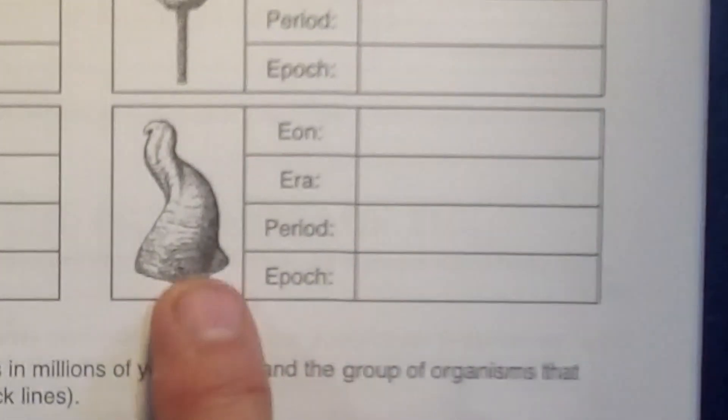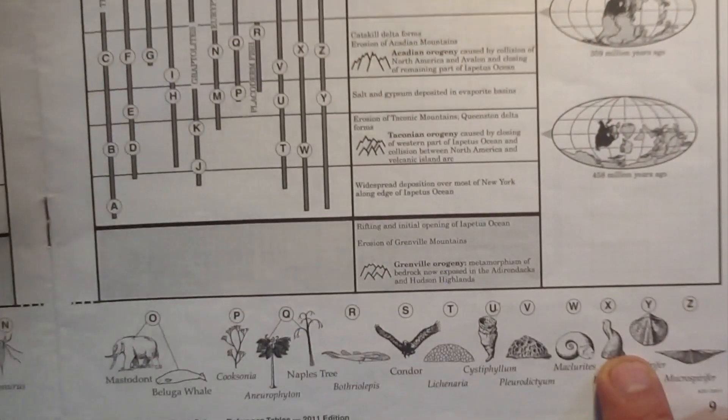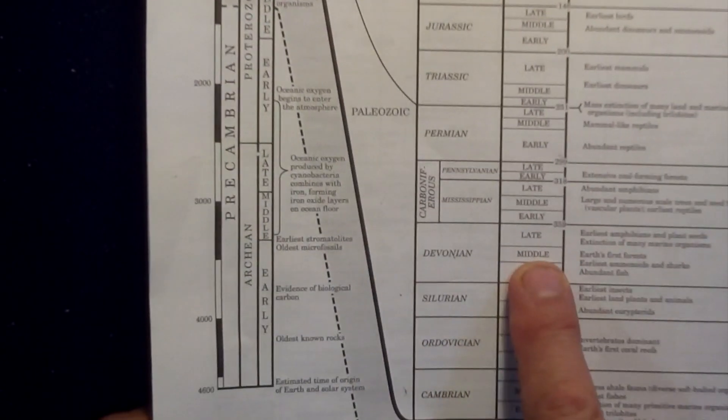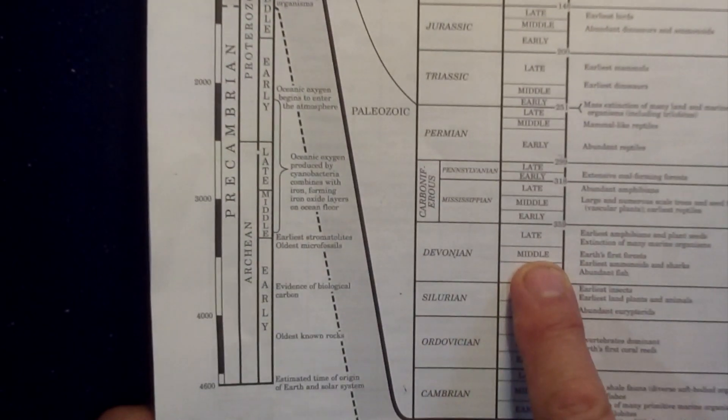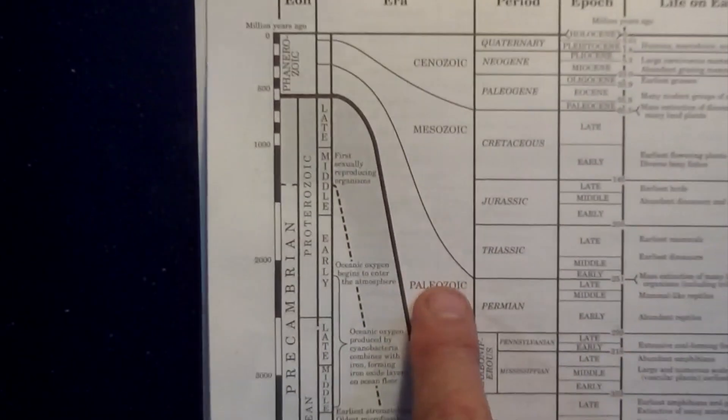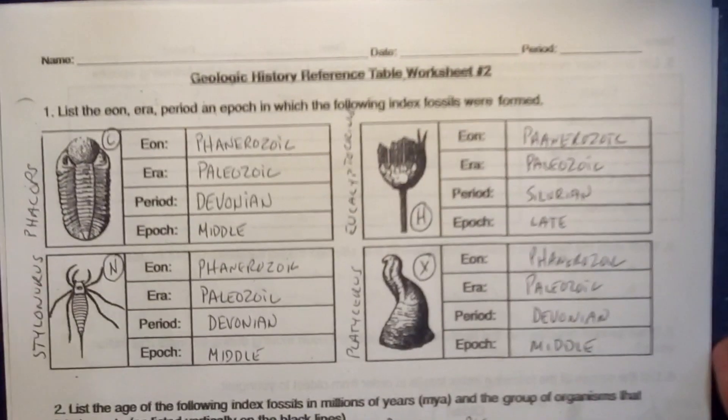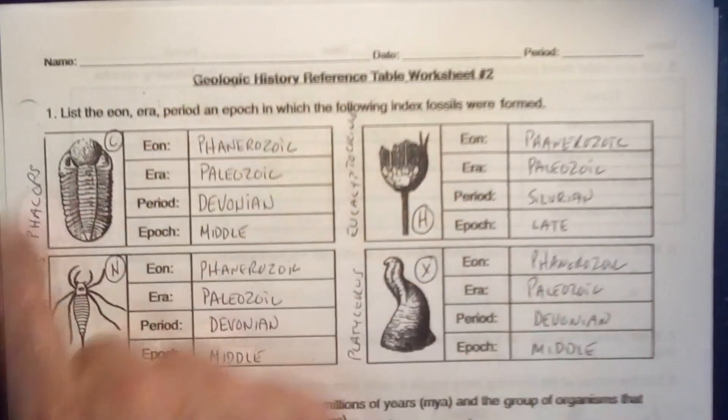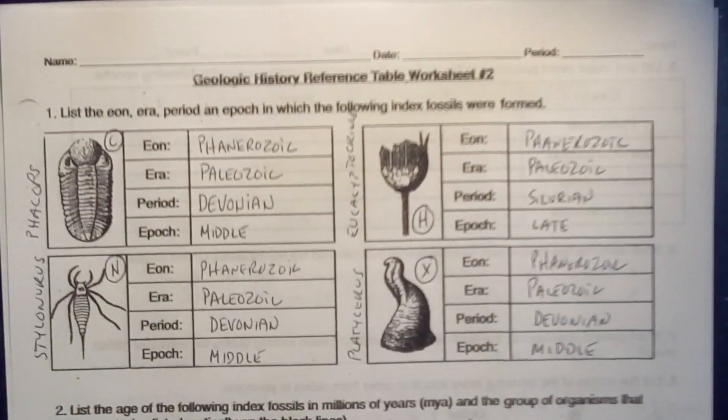This index fossil matches up with letter X, which is out here. Letter X matches up on the table right over here. If I go to the side, I see that is also Middle Devonian, Paleozoic, Phanerozoic. That takes care of the four parts to number one.